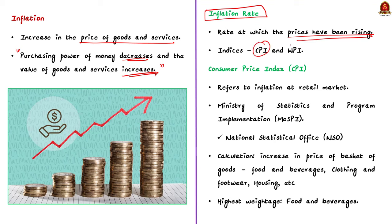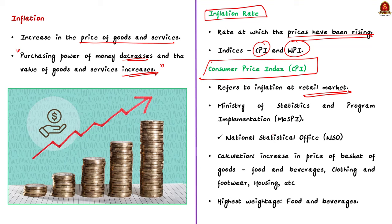CPI and WPI are among the indices used to measure the inflation rate. CPI refers to inflation at the retail level and the data about CPI is compiled by the National Statistics Office of the Ministry of Statistics and Programme Implementation. The value of CPI is calculated from the increase in the price of goods which includes food and beverages, clothing, footwear and housing. The highest weightage is given to food and beverages, which accounts for 45.86% of the total weightage.